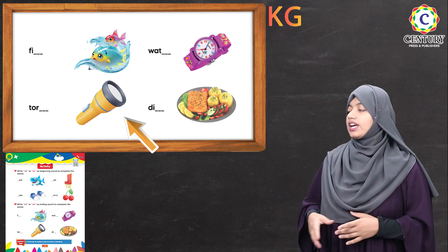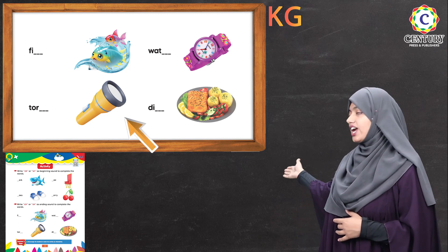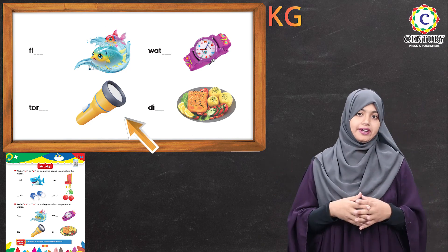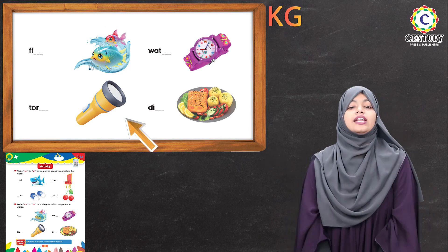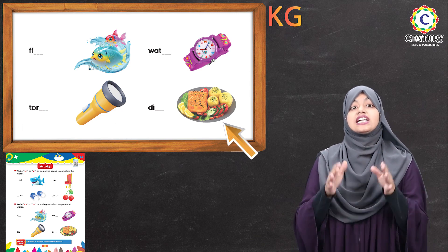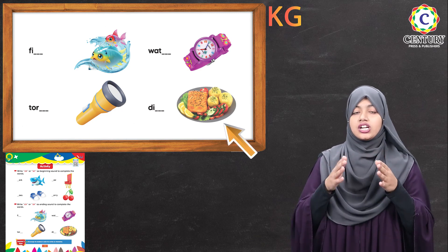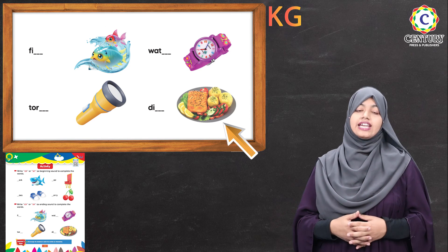Torch. It's 'torch' — and here the sound of SH is coming, meaning S and H. And the other one is 'dish.' It's 'dish.' The SH sound is coming at the end of 'dish.'